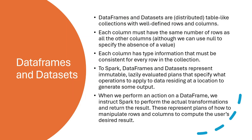When we talk about these high-level abstractions or structured APIs provided by Spark - DataFrames and Datasets - you should think of them as a distributed table-like collection with well-defined rows and columns. Imagine it like a relational table: each column must have the same number of rows, so if you don't have a value for a column it will be null. Each column will have a type which will be consistent - a column cannot be string for one row and integer for another.